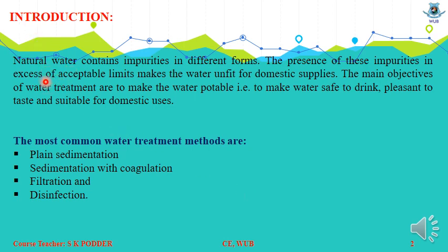Introduction. Natural water contains impurities in different forms. The presence of these impurities in excess of acceptable limits makes the water unfit for domestic supplies. The main objectives of water treatment are to make the water potable — that means to make water safe to drink, decent to taste, and suitable for domestic use.